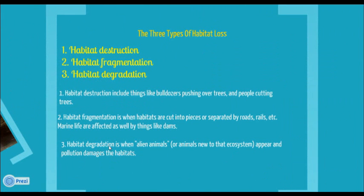There are three types of habitat loss. The first one is habitat destruction. Habitat destruction includes things like people cutting down trees and bulldozers pushing over trees. Number two is habitat fragmentation, which means breaking the habitat apart. For example, when people build roads in between habitats, and then it cuts the habitat into parts.